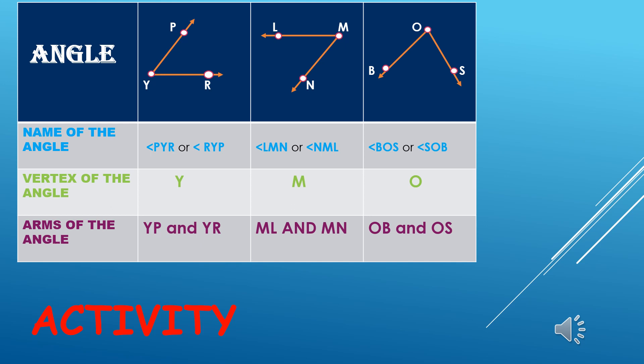We have already learned how to read the rays. We always start with the end point. So I will read the arms as ray YR and ray YP. For the second angle, the names of the arms are ML and MN, whereas for the third one they are OB and OS.